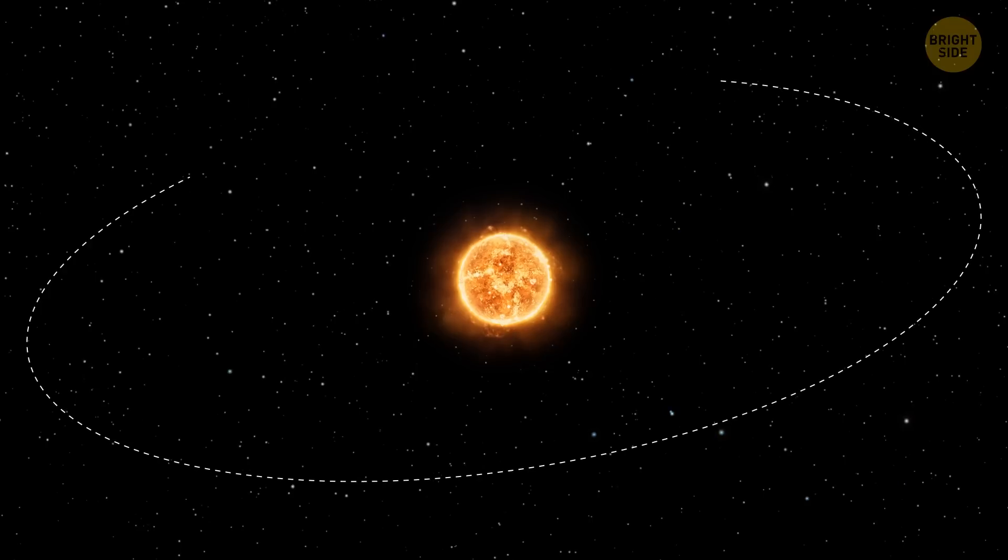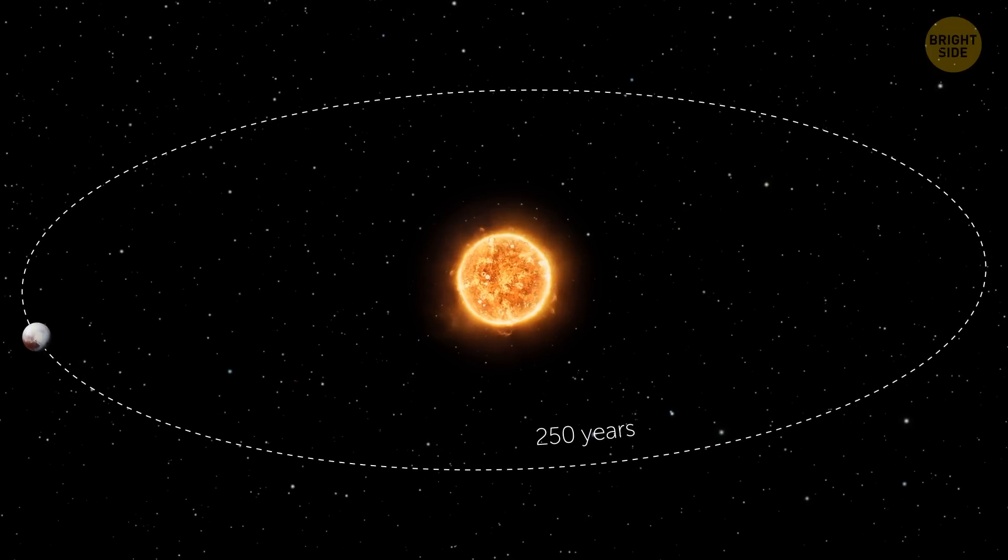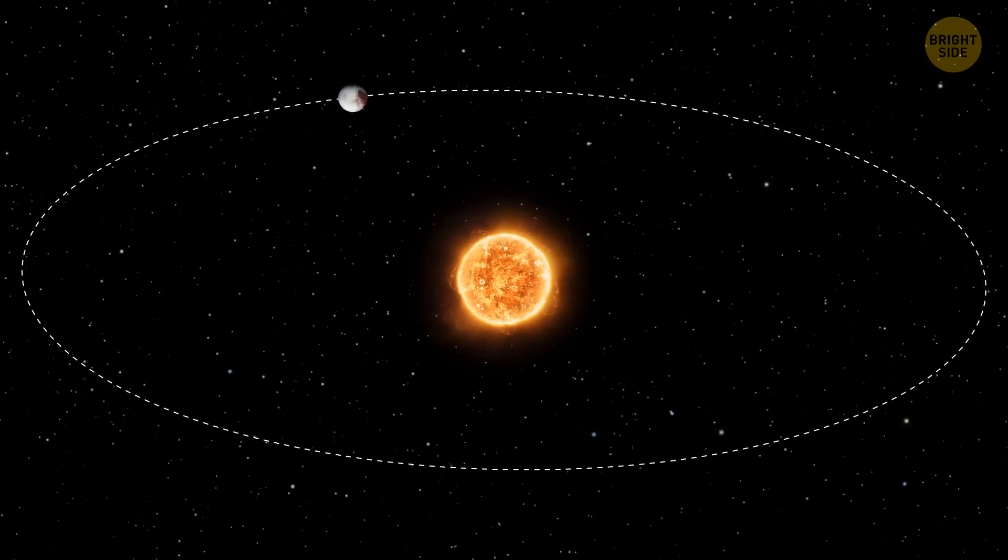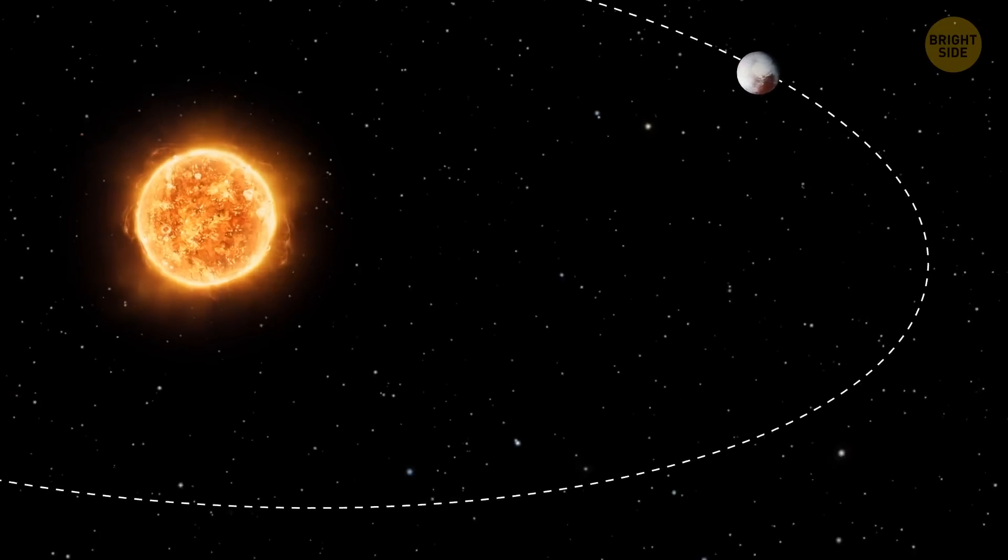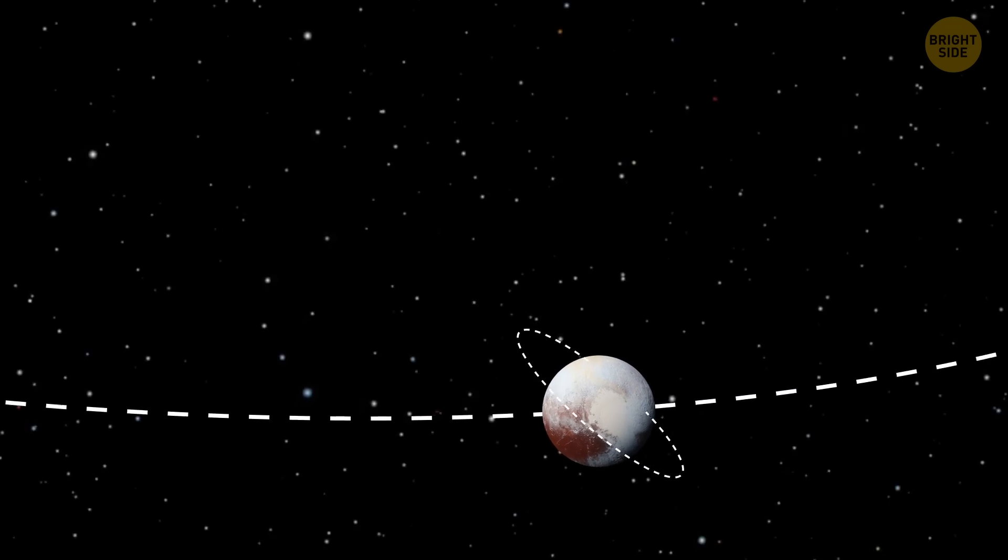Its orbit around the Sun looks like an oval, and one year on Pluto takes around 250 Earth years. Pluto also shows a strange and unusual retrograde rotation because it's tilted on its axis, which means that it spins on its side.